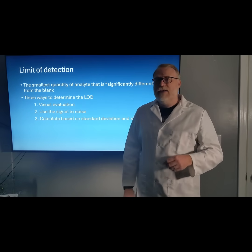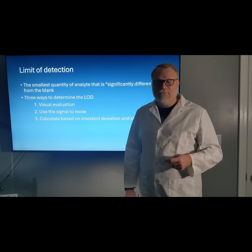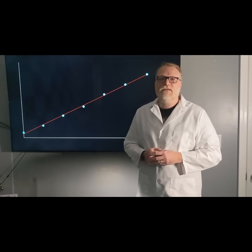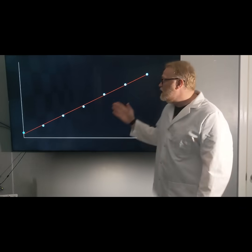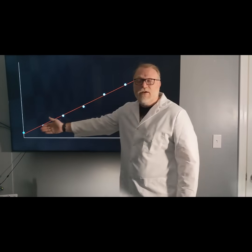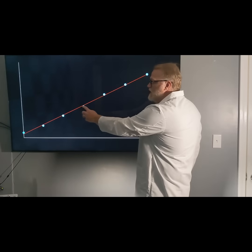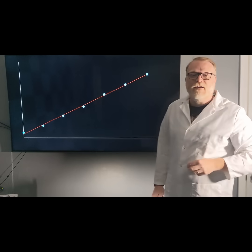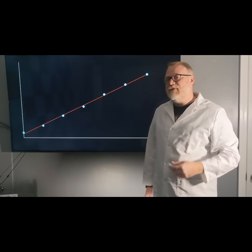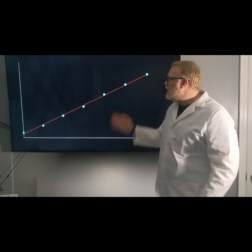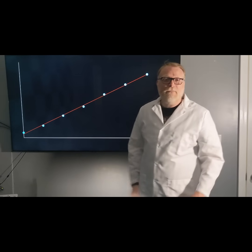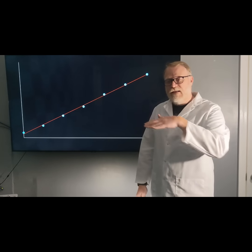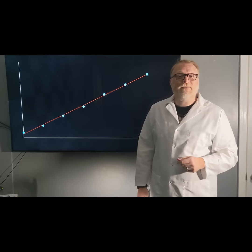The third method would be a calculation based on multiple standard injections, and there are actually two ways to do this. The first way would be to create a calibration curve. You would measure your standard error from each point to the center of your regression line, average that together to get your average standard error, then calculate the slope of your line. You'd take 3.3, multiply it by your average standard error, divide it by your slope — that gives you your limit of detection.